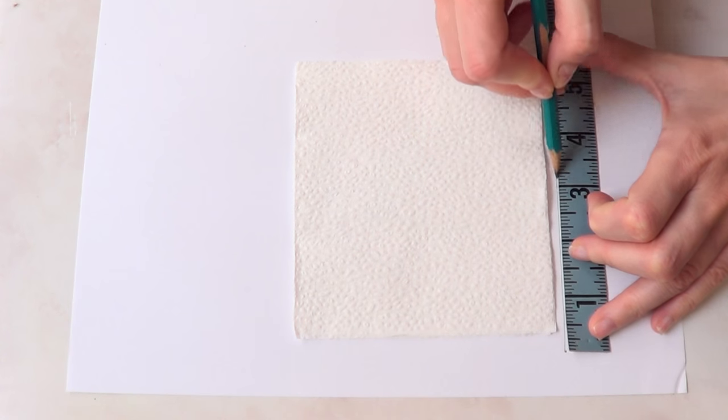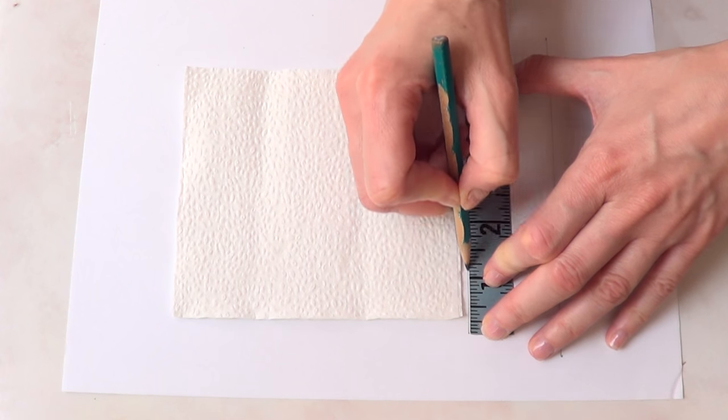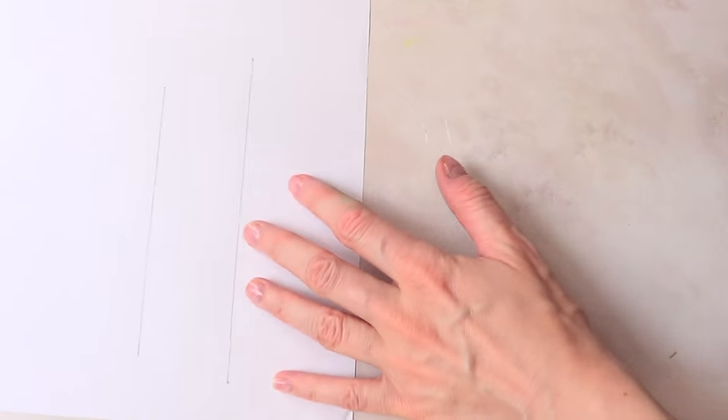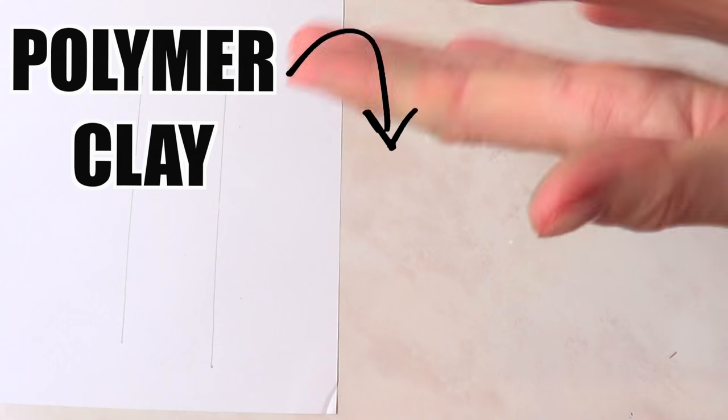This one is going to be six inches by five inches, so I'm just going to mark two lines for that. Then I'm going to be working with polymer clay, but I'm going to just roll my clay in the shape of a snake.